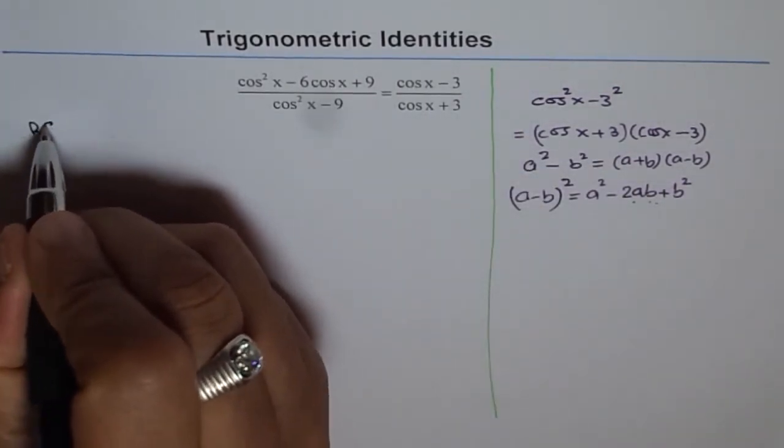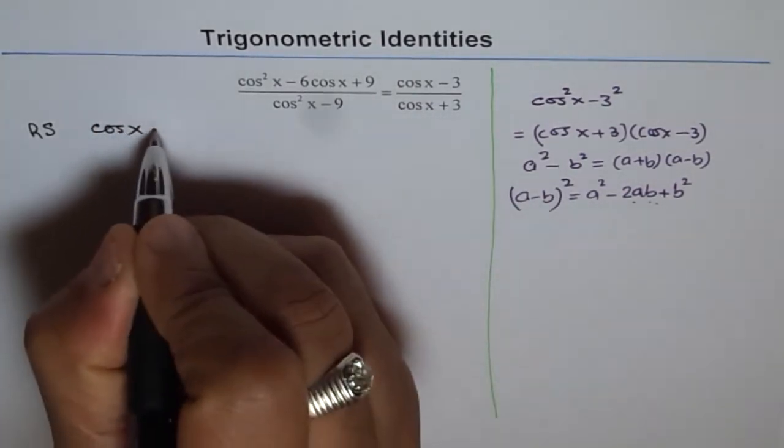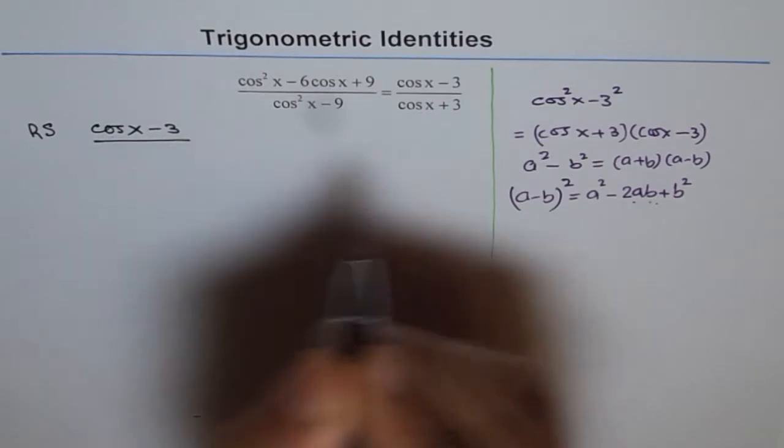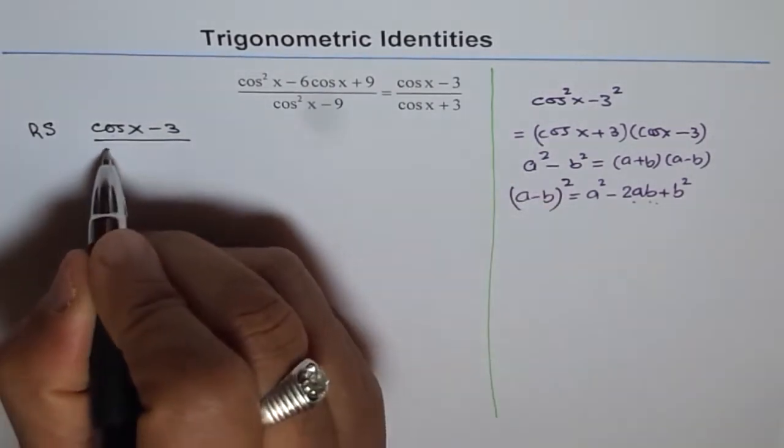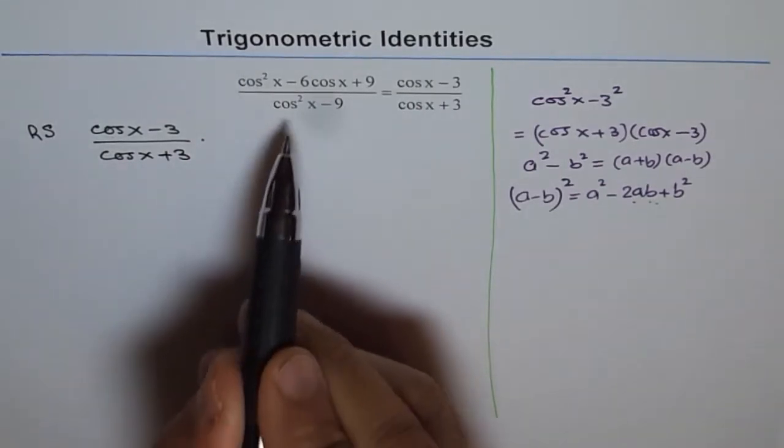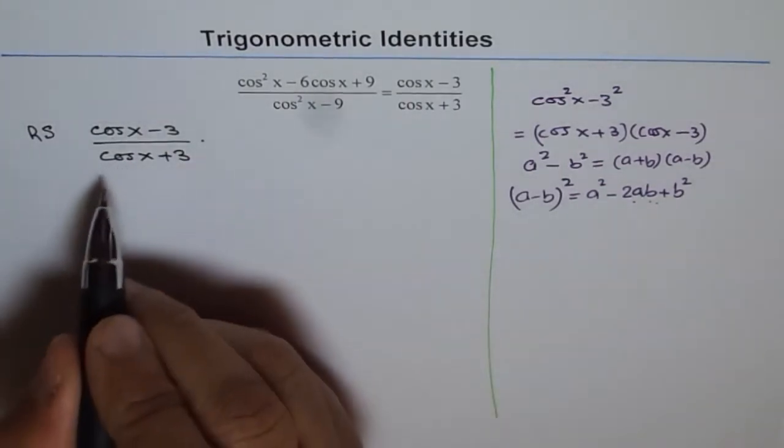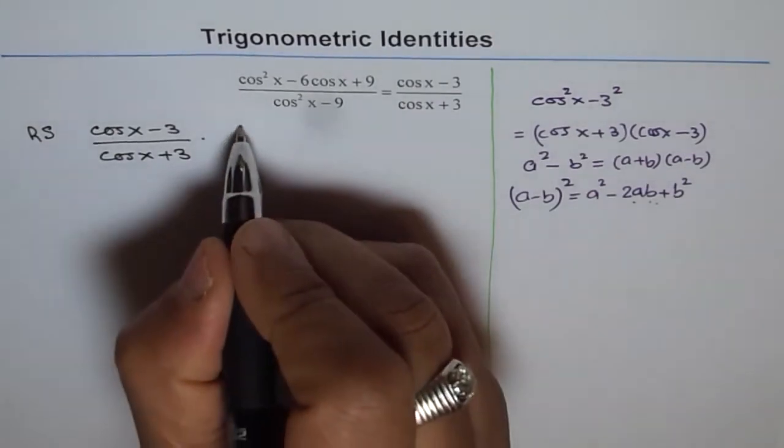Now if you look at the right side, right side is cos x minus 3 divided by cos x plus 3. Now this is difference of squares. That means I can multiply and divide by cos x minus 3. What happens then?